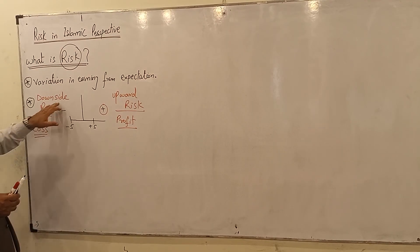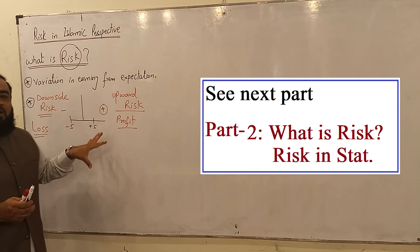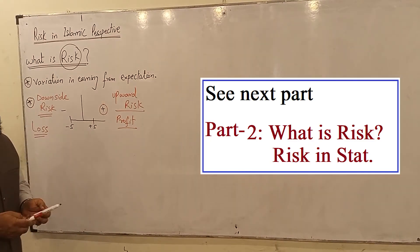So this is the downward side and this is the upward side. So this is the division of risk in these two types. In statistics...